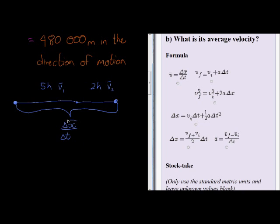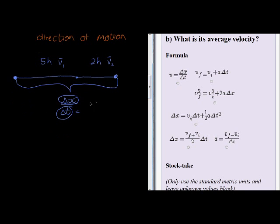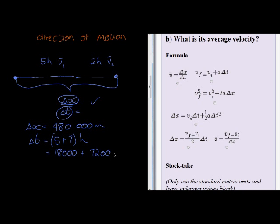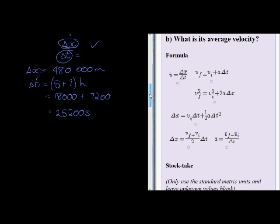And we've already calculated the total displacement, and we know the total time. So knowing the formula, this is the formula, we know total displacement. We've just worked it out is four hundred and eighty thousand meters. And we also know that the change in time was equal to five plus seven, or that's in hours, or it's 18,000 seconds plus 7200 seconds, which is twenty-five thousand two hundred. Twenty-five thousand two hundred seconds, that's the total time it took him.